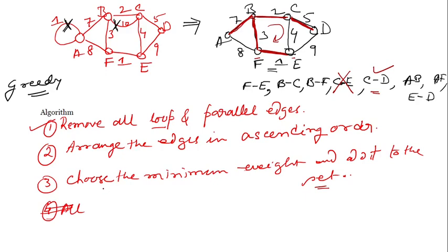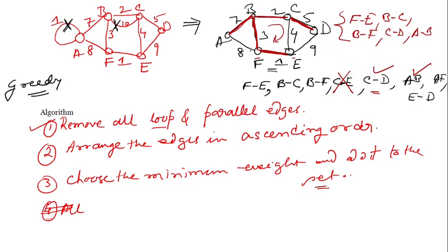All the vertices have been touched. AB is taken into the set. The set members are: FE, BC, BF, CD, and AB. CE was excluded. Next is AF - if you take AF it will create a cycle, so AF cannot be taken. ED is also excluded because it would create a hexagon cycle. So this is our final result.